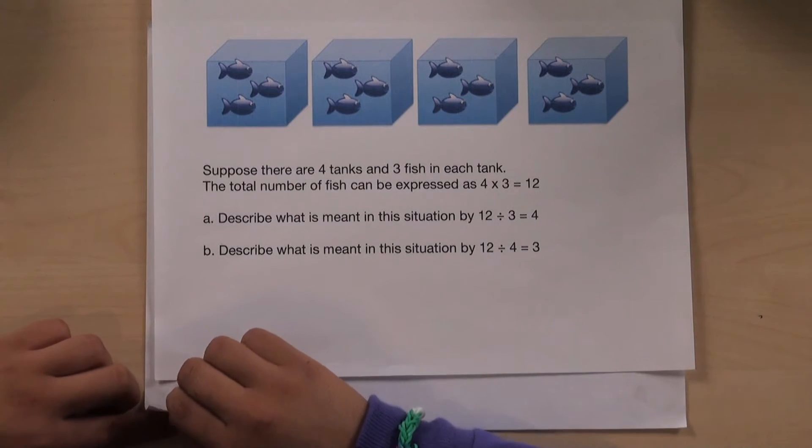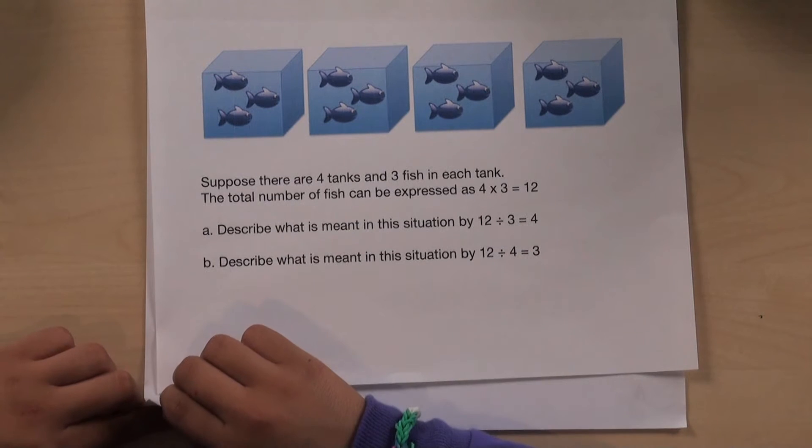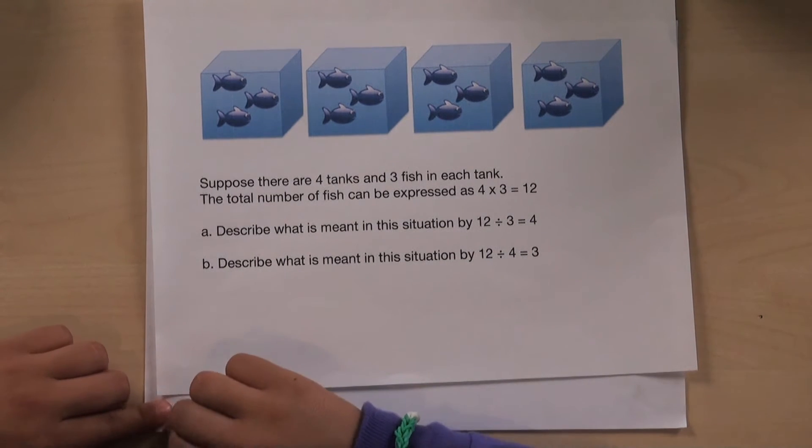Describe what's meant by this equation. There are twelve fish and four tanks, and we need to know how many fish will be in each tank.